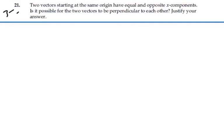Here's problem 3.21. Two vectors starting at the same origin have equal and opposite x components. Is it possible for the two vectors to be perpendicular to each other?